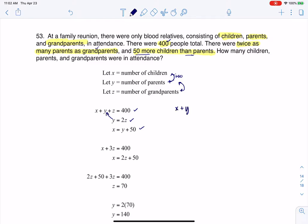Instead of x plus y plus z equaling 400, I'm looking at x plus 2z plus z equaling 400. If I simplify that, I get x plus 3z equals 400, and that's where you see this first equation here.